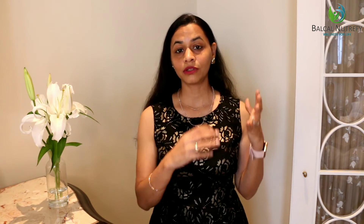Just as there are three categories for glycemic index, glycemic load is also divided into three ranges. Foods with a glycemic load value of less than 10 are considered low glycemic load. Values between 10 to 20 are medium glycemic load, and values above 20 are high glycemic load. So even though watermelon has a high glycemic index, it falls under the low glycemic load category.